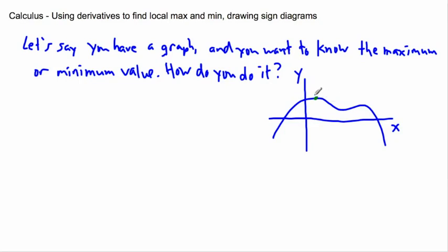Now I'll talk about in a second if it's local or global. Things can be local or global. Global means it never gets higher than that value — in this case, this is the highest the graph ever gets. When I say value, I mean the Y value — that's always implied with graphs. So the maximum Y value here would be called the global maximum.